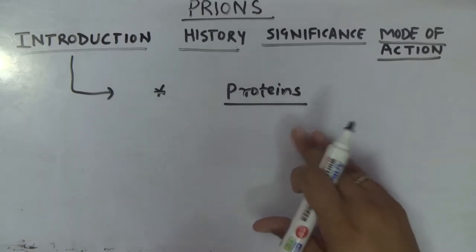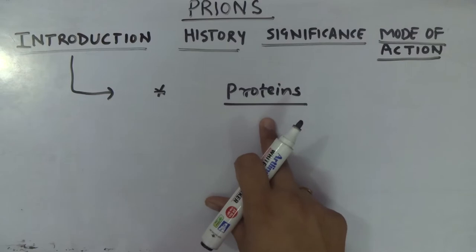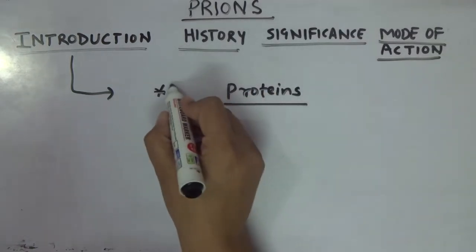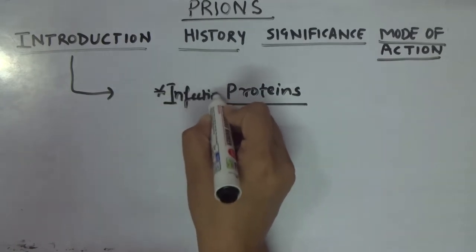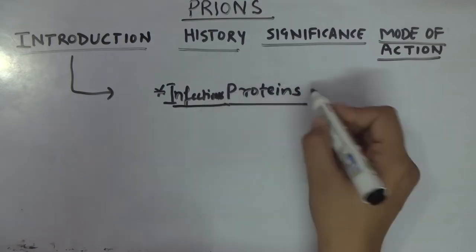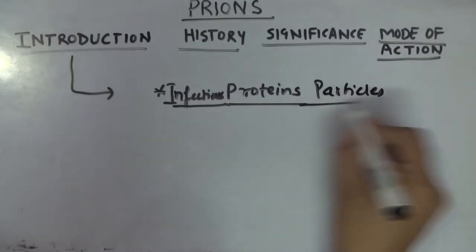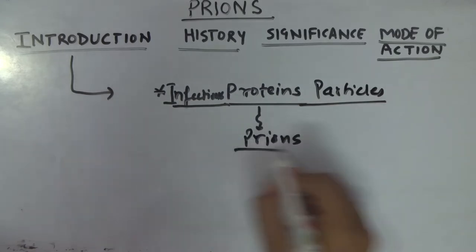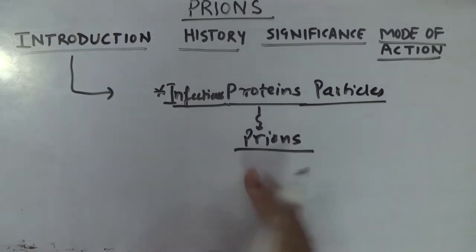Prion proteins are of an infectious type — they are able to cause various types of infections. So infectious protein particles are known as prions.